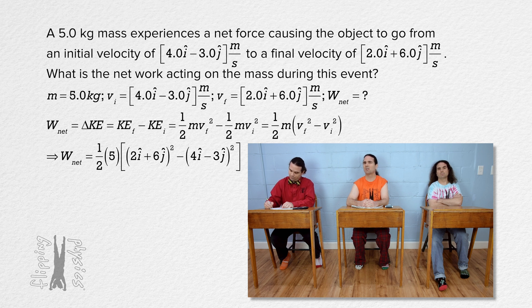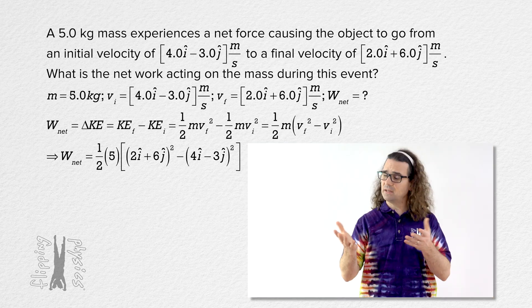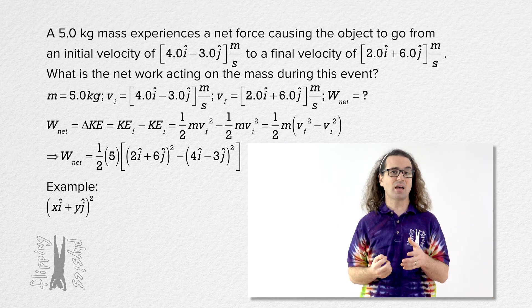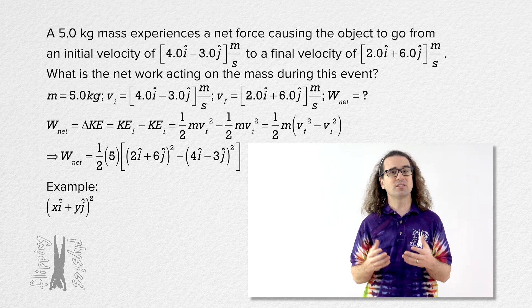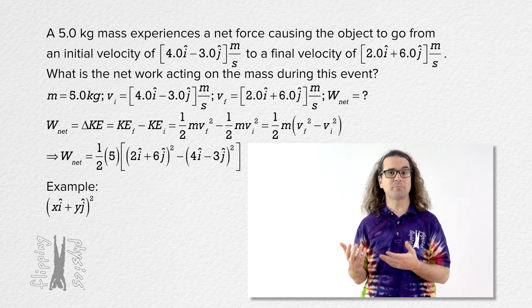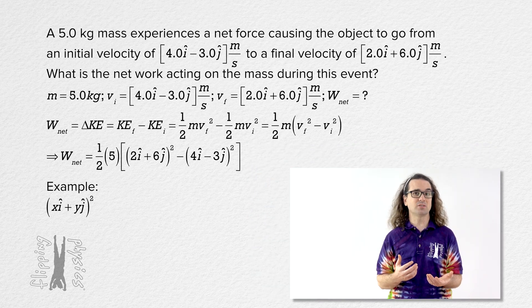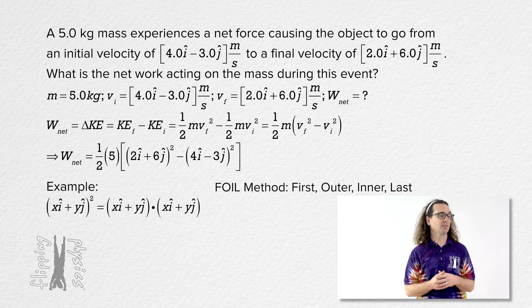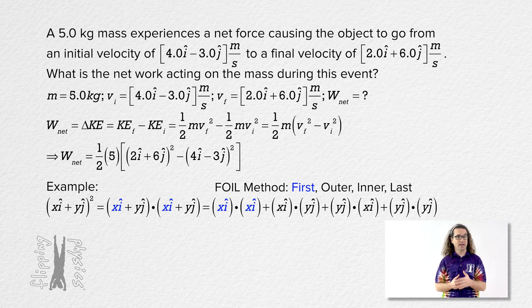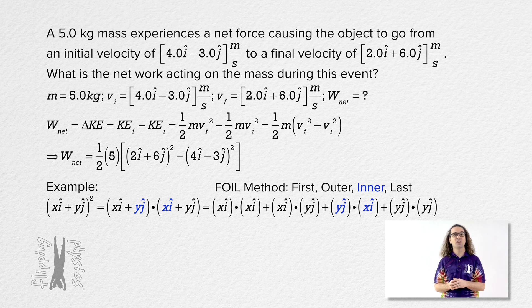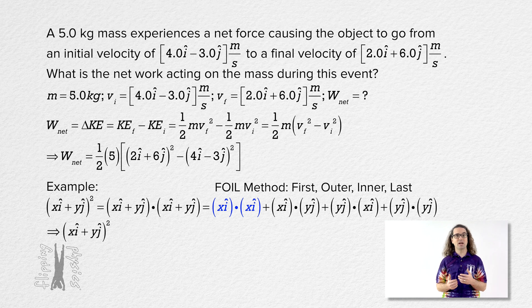How do we square a unit vector expression? That is a fair question. Let's look at the example xi plus yj quantity squared to make sure we understand this. Realize to square something means to multiply it by itself. In the case of unit vectors, that means the dot product. So we can foil this. First outer inner last. Right. And get xi dot xi plus xi dot yj plus yj dot xi plus yj dot yj. The dot product of xi and xi is just x squared because the two unit vector i's are in the same direction.